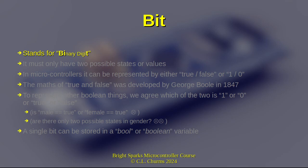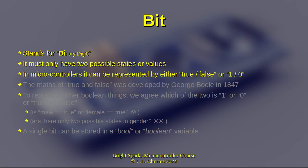For something to be represented by a bit, it must only have two possible states or values — on and off, bright or dark, light or darkness, male or female, zero and one, true and false, in and out, up and down — anything that can have only two possible states or values. In microcontrollers, we represent any binary digit by either true or false, or one or zero.